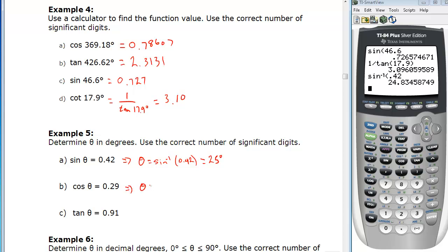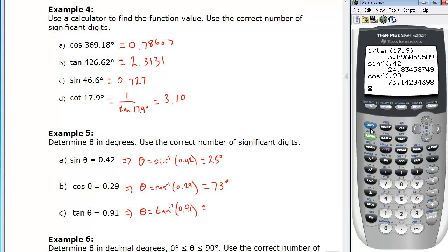Theta for example 5b is the cosine inverse of 0.29. Shift or second function cosine of 0.29 gives us 73 degrees rounded to two digits. Finally, theta for C is the tan inverse of 0.91. Shift tan of 0.91 is 42 degrees rounded to two digits. That's example five.